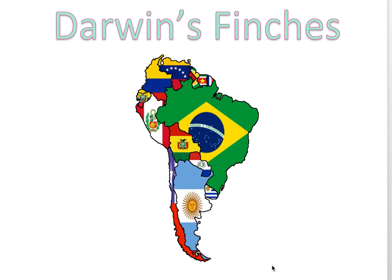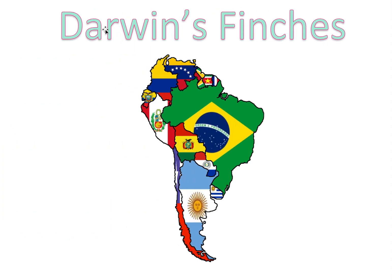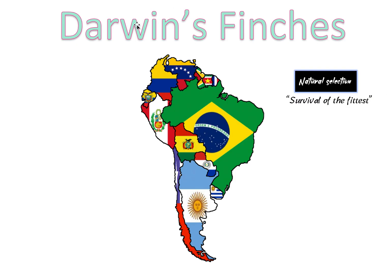In this video we're going to be talking about Darwin's finches. Darwin's finches is an example of natural selection — it's one of the examples you need to know for the IB. There are three examples, but Darwin's finches is one of them, and it's an example of survival of the fittest, or natural selection.